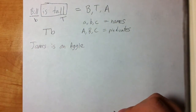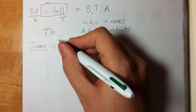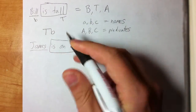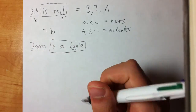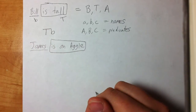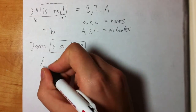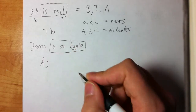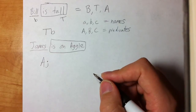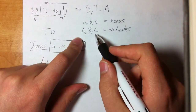Let's try: 'James is an Aggie.' The first thing we do is identify our parts. James is our individual constant. 'Is an Aggie' is our predicate. Our predicate gets a capital letter — I'll choose A for being an Aggie — and then I'll choose lowercase j for James. That's all there is to it: our individual constants use lowercase letters and our predicates use capital letters.